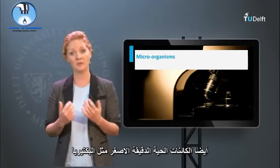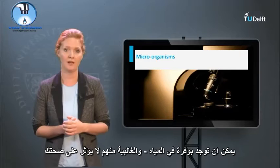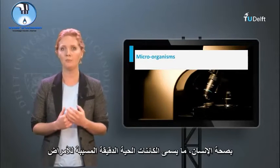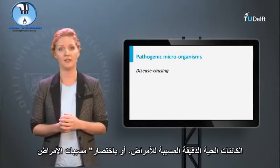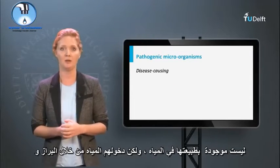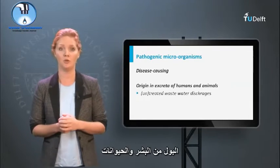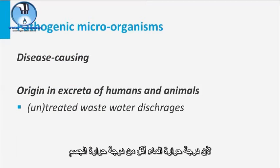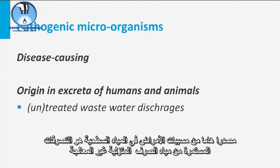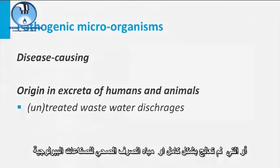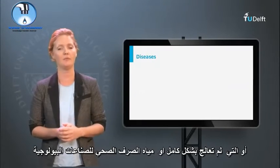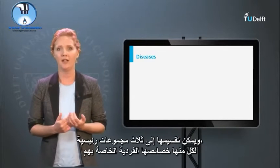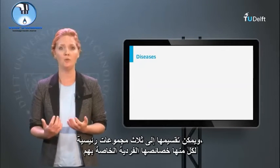Smaller microorganisms such as bacteria can also be abundantly found in water, and the majority do not affect your health. However, there are also microorganisms that are harmful to human health — the so-called pathogenic microorganisms. Pathogens are not present in water by nature, but enter the water through feces and urine from humans and animals. Pathogens have difficulty surviving in natural water because the temperature is lower than body temperature. An important source of pathogens in surface water is the continuous supply of untreated or not fully treated wastewater from domestic and bio-industry. Pathogenic microorganisms can cause different diseases and can be divided into three main groups, each with their own individual characteristics.